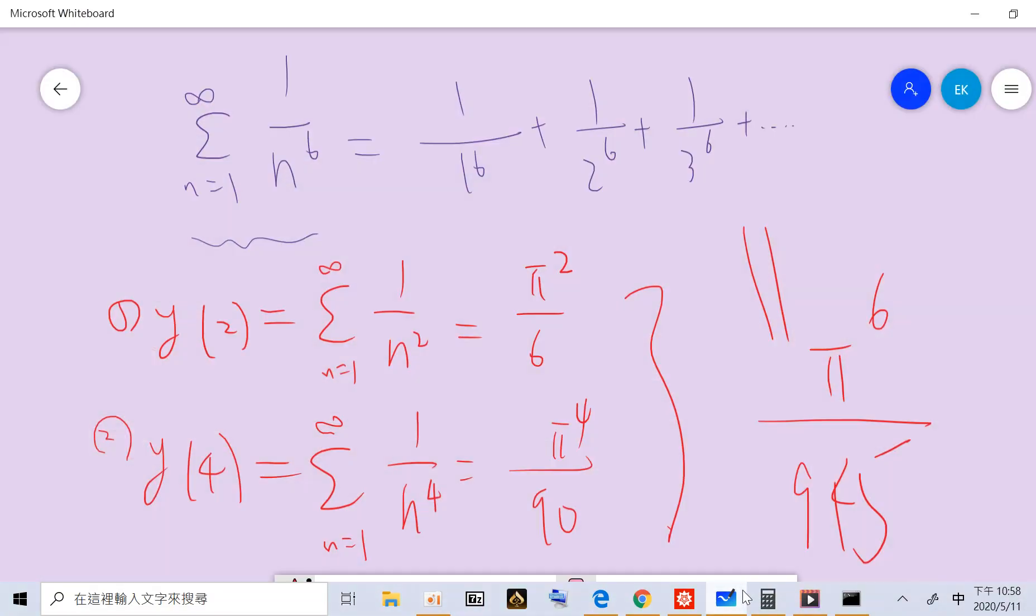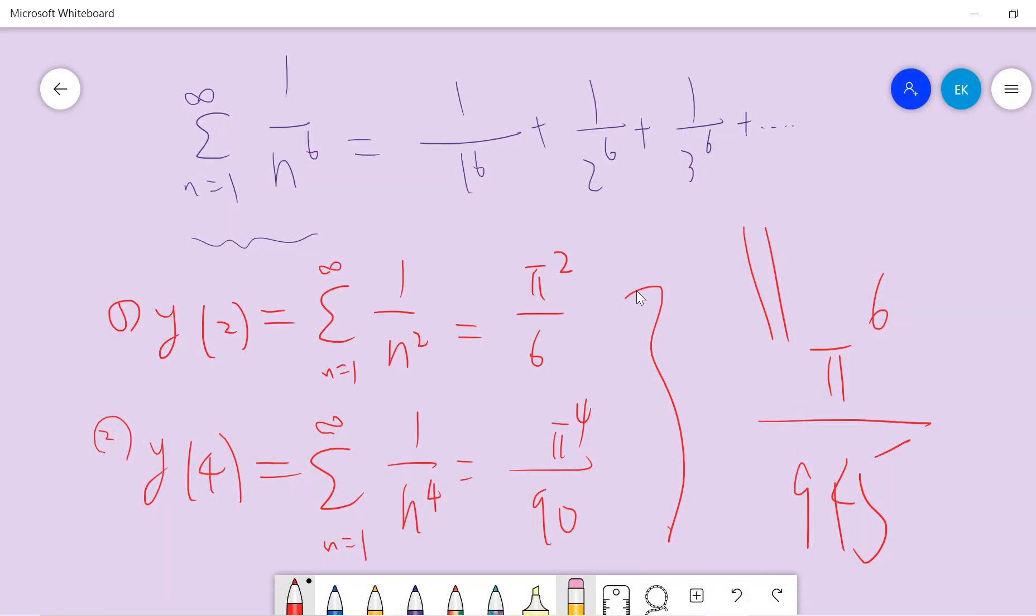Hello guys, so today we are trying to give a proof that we already did for the first two. We proved zeta 2 and zeta 4 of these values. So today we want to prove this fact: 1 over n to the 6 powers, and the result is pi to the 6 over 945.